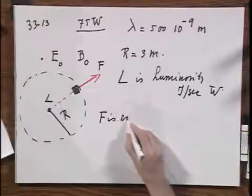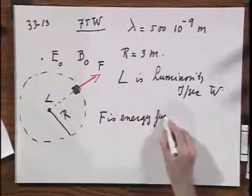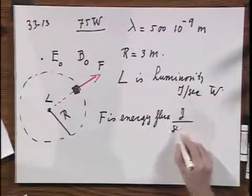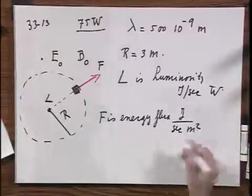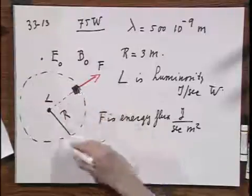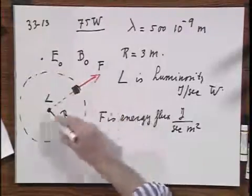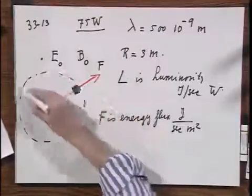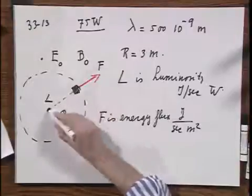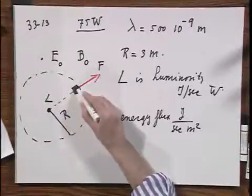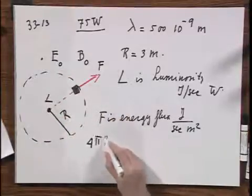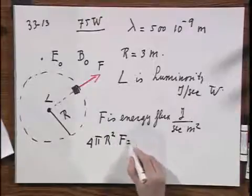And so therefore, if there is no absorption between the source and this sphere, this sphere could be huge. It could be 10 meters, it could be 10 light years. But all the energy must come out of that sphere if there is no absorption between the source of electromagnetic radiation and the sphere with radius r. So it follows immediately, if there is no absorption, that 4πr² times f equals L.